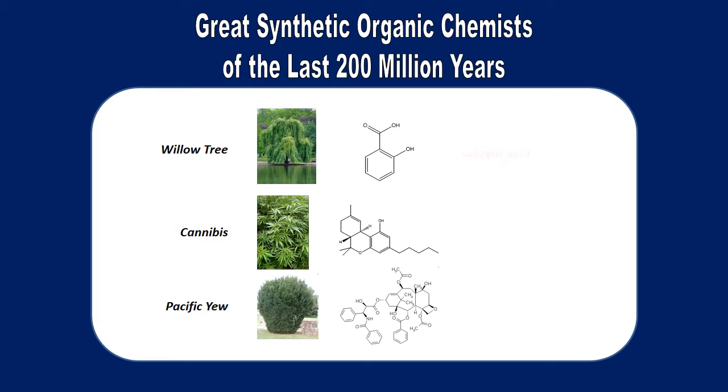Here are just a few of them, some of the great synthetic organic chemists of the last 200 million years. You see, small organic compounds don't have to be created in a laboratory. We can source them from natural products. For example, the willow tree creates salicylic acid, the plant cannabis can be used to source tetrahydrocannabinol, and pacific yew is the source of taxol. These three represent an analgesic, a psychotropic, and an anti-cancer drug respectively.